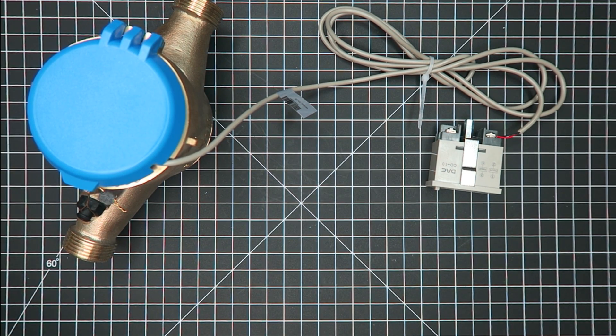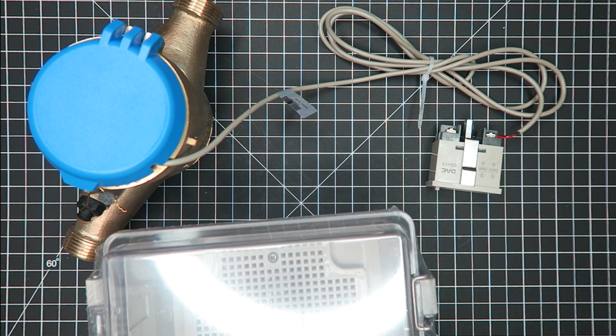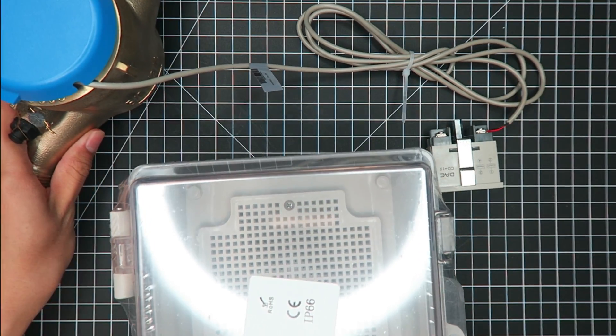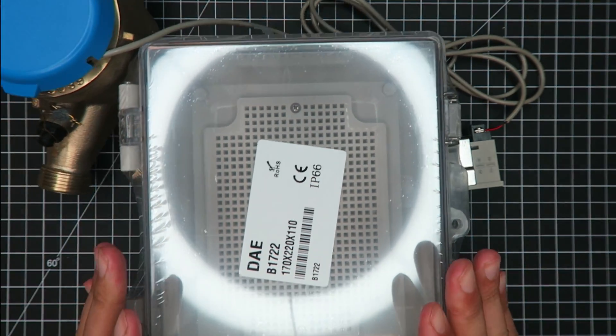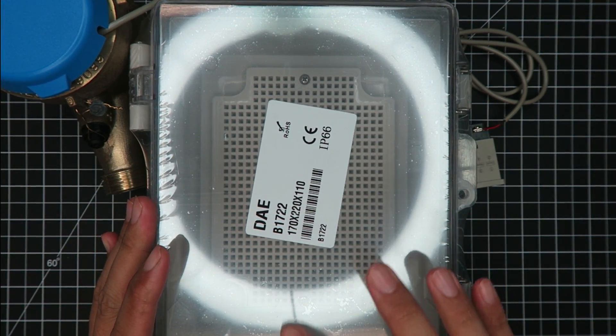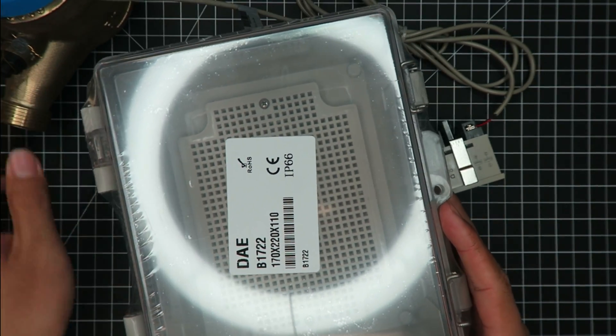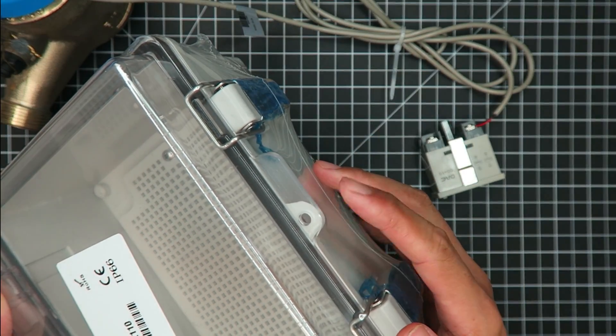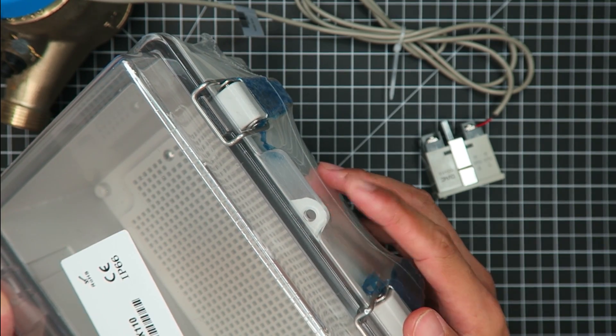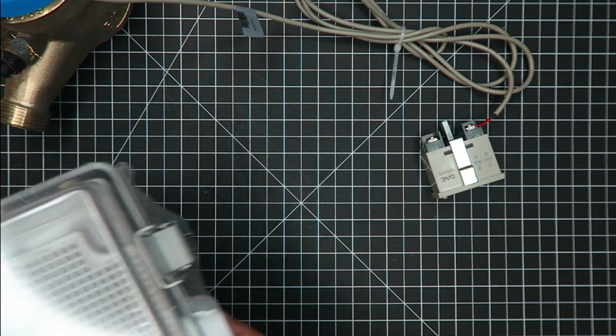And if you need to place the CO-10 on the outside of the building, you will need to place the device within a weatherproof enclosure like the B1722. For this one, you can put a lock on the lock hole to prevent anyone from tampering with the reading on the CO-10.